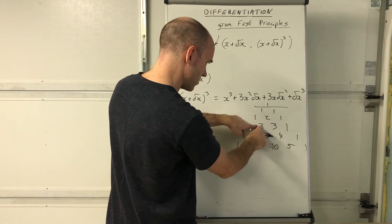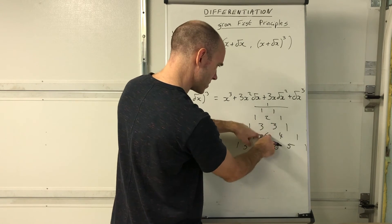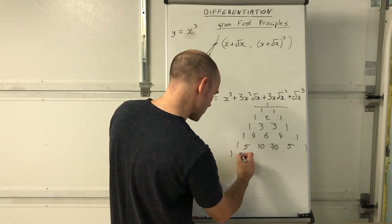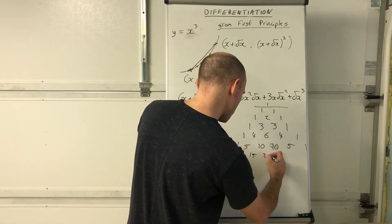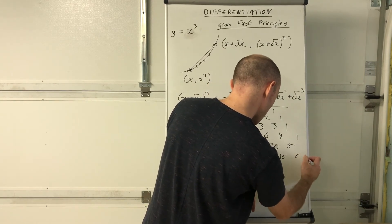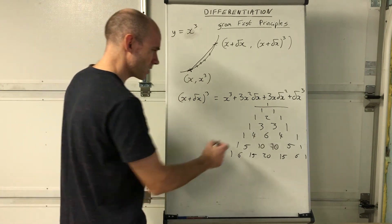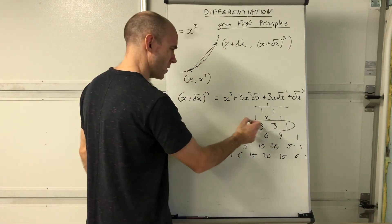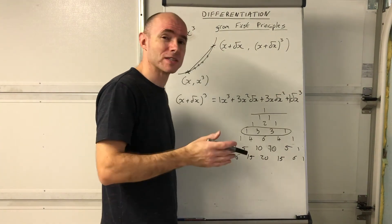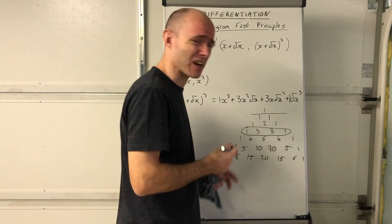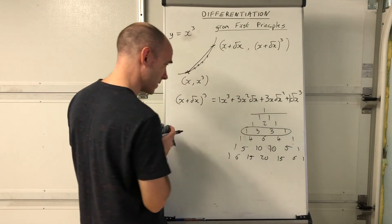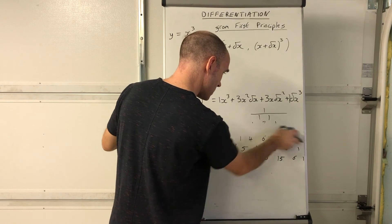The rule is: ones down the sides, and each interior number is the sum of the two above it - so 1+2=3, 1+3=4, 3+3=6, and so on. For a cubed expansion I used 1, 3, 3, 1 - you can see those there. For x to the power of 4, I'd use the 1, 4, 6, 4, 1 row - these are called binomial coefficients.